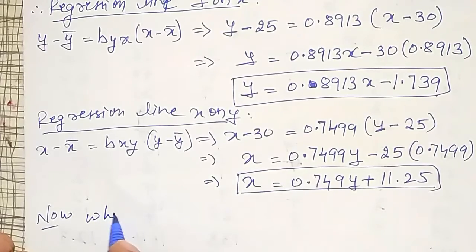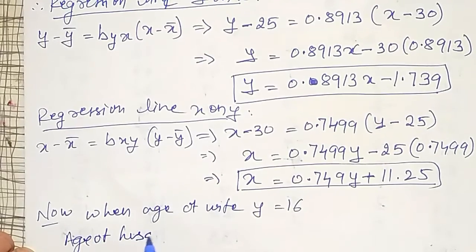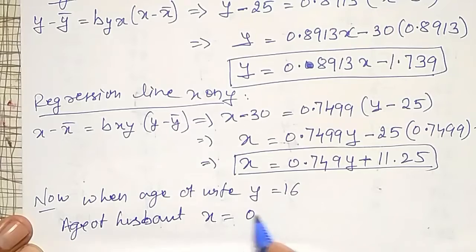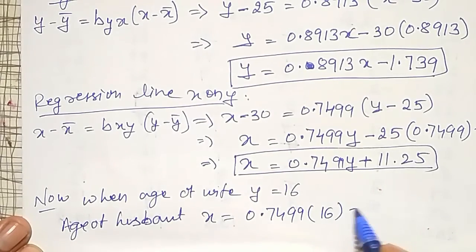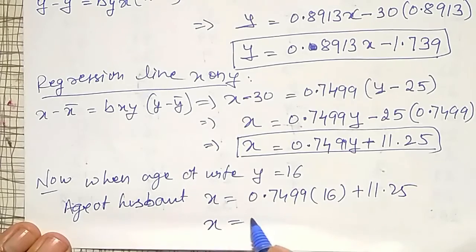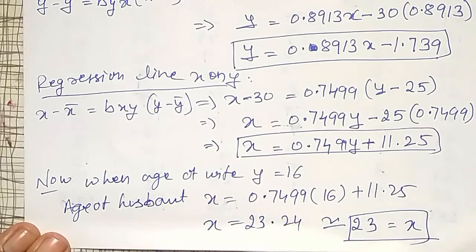When age of wife Y equals 16, age of husband X is given by X equals 0.7499 times 16 plus 11.25. If you simplify that, I am going to get it as 23.24. Age is approximately 23. And this is how to calculate the simplification.